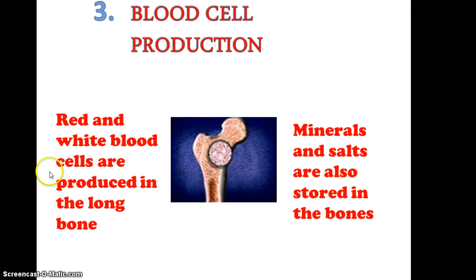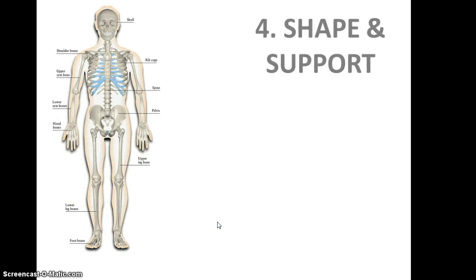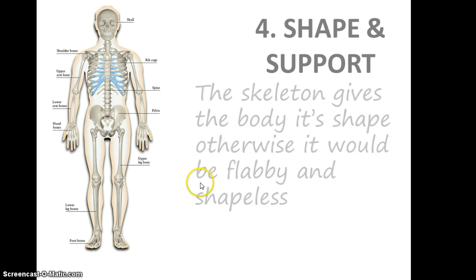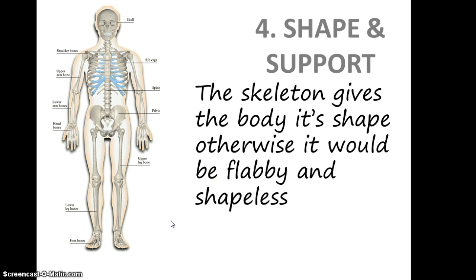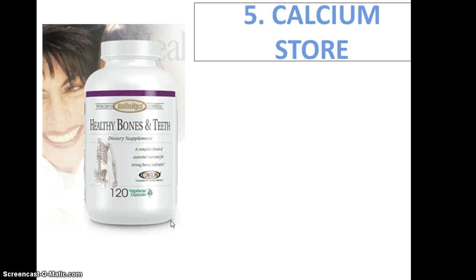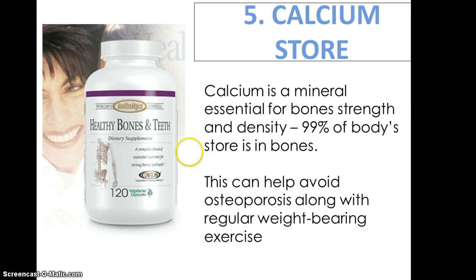Blood cell production produces red and white blood cells, which are created in our long bones. Minerals and salts are also stored in these bones. Our skeleton is obviously there for shape and support — without our bones, our flesh would have nothing to hang on to and we'd be quite jelly-like. Lastly, calcium is the mineral essential for bone strength and density, and 99% of the body's calcium stores are in your bones.